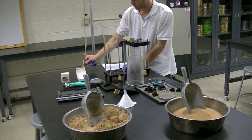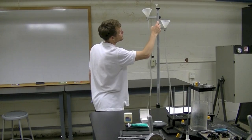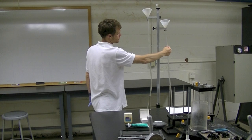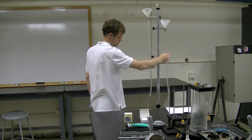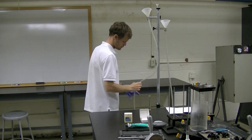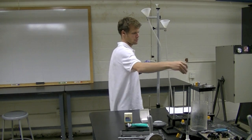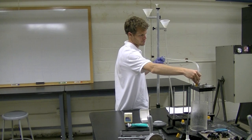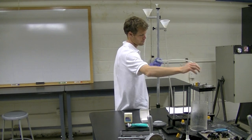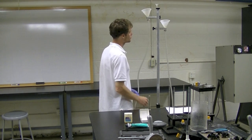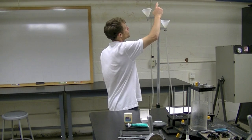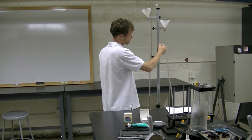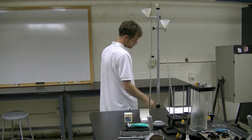We have our tamper. We have our assembly for falling head and constant head. The tubes are used for constant head tests that attach into the top of the permeameter, and that middle tube assembly is for the falling head test.